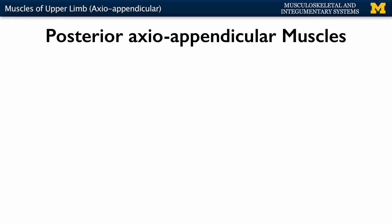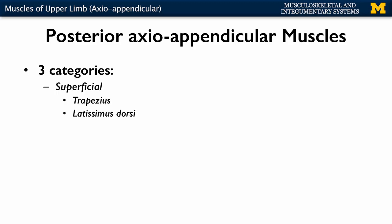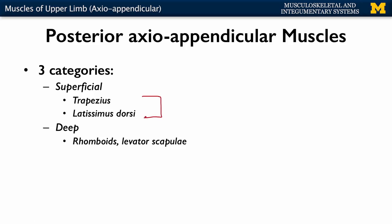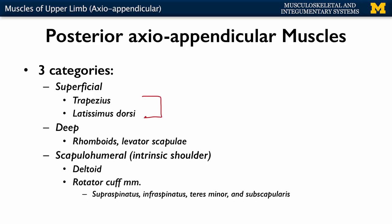Those are the main anterior muscles. Let's move to the posterior side, which is quite a bit more complex. You have three main categories: superficial — the larger muscles, your trapezius and your latissimus dorsi; deep — we're not going to go into too much detail here as they don't play a big role in terms of actions, but these muscles are referred to as the rhomboids (rhomboid major and rhomboid minor) and your levator scapulae; and then muscles associated with the intrinsic shoulder, playing an important role in not only the actions of the shoulder joint but also the stability. We've all heard of the deltoid — that cap on top of your shoulder — and then your rotator cuff muscles, which form a very important protection on either side of the shoulder joint.